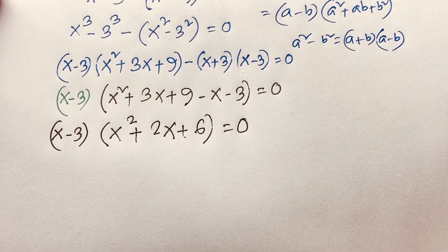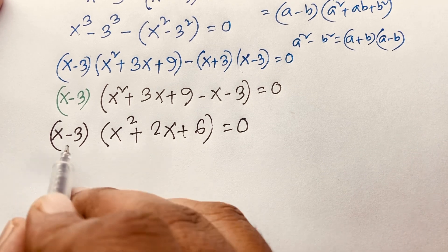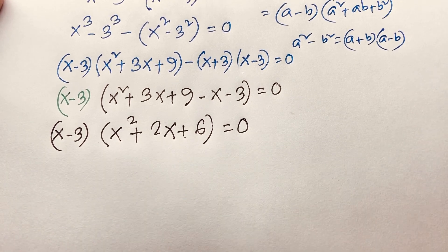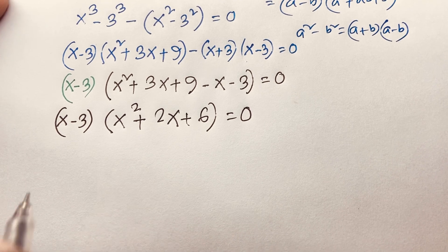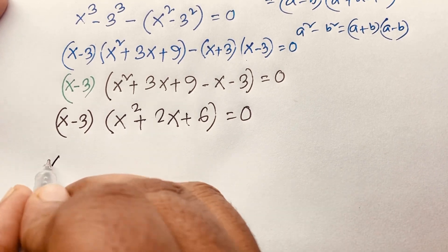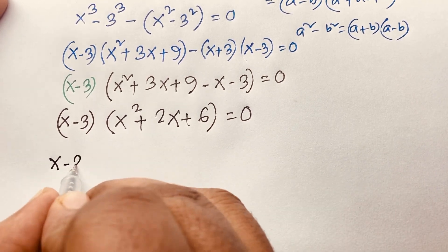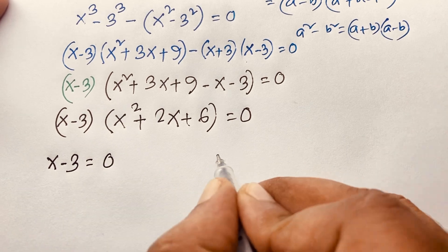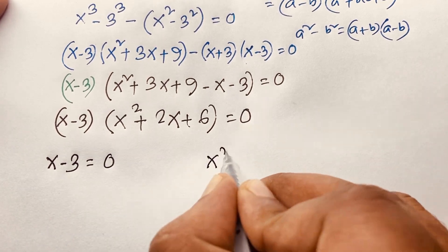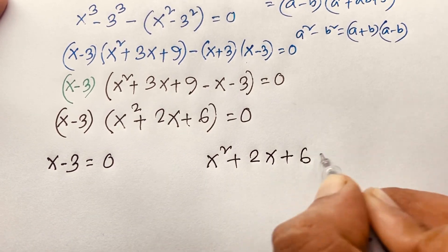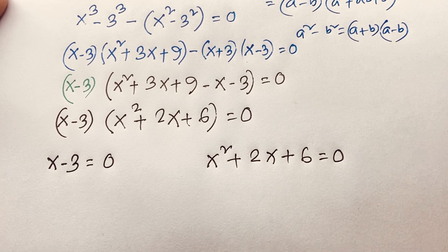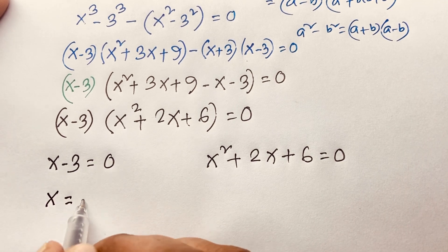Now, x minus 3 equals 0 gives x squared plus 2x plus 6 equals 0. So we are finding out these two factors. Our first case: x minus 3 equals 0. In the other case: x squared plus 2x plus 6 equals 0. And you can see, from the first case, x is equal to 3. This is our real answer to this math question.